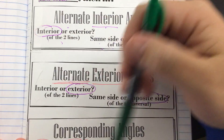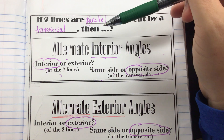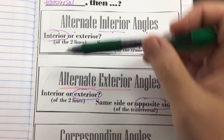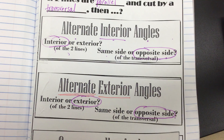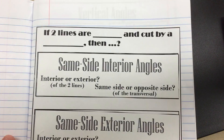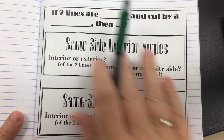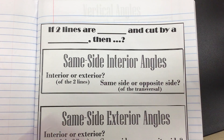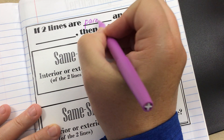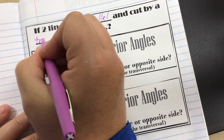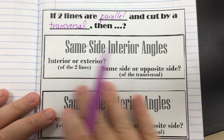So this page — if you haven't made the connection yet — these are all pairs of angles that are congruent when you have parallel lines: alternate interior angles are congruent, alternate exterior angles are congruent, and corresponding angles are congruent. Continuing on to page 17 in your notebook, these two pairs of angles are also going to be true when you have parallel lines cut by a transversal.